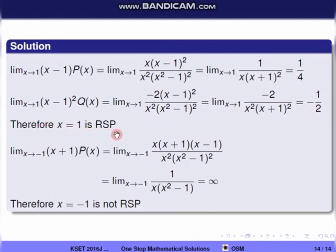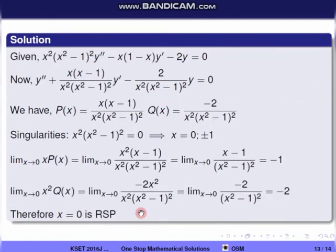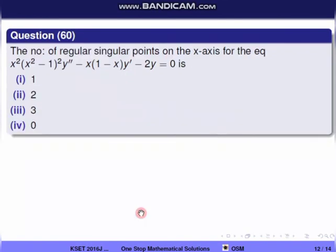Checking x = −1: lim(x→−1) (x+1)·p(x) = lim(x→−1) x(x+1)(x−1)/[x²(x²−1)²] simplifies to lim(x→−1) 1/[x(x²−1)] = −1, which is not finite (denominator → 0). So x = −1 is not a regular singular point. Therefore the equation has exactly 2 regular singular points (x = 0 and x = 1), and the correct option is 2.